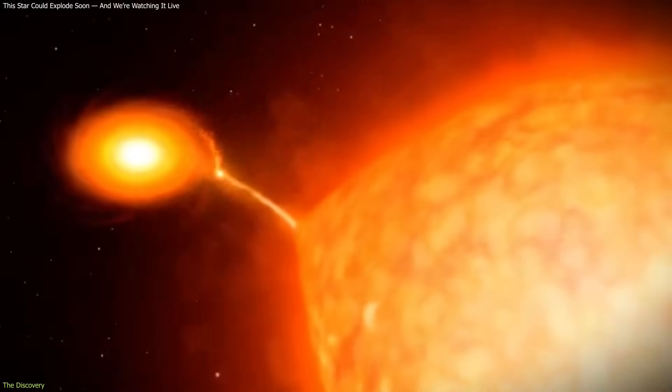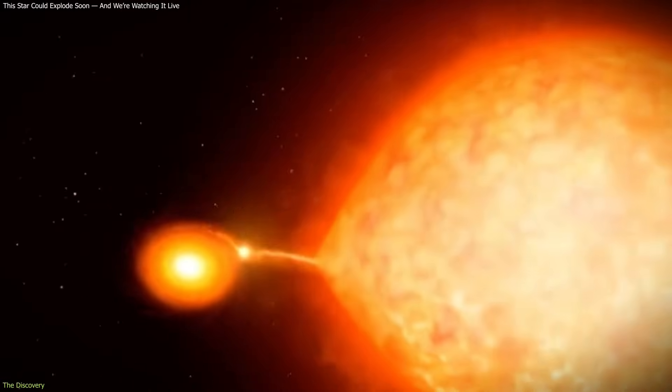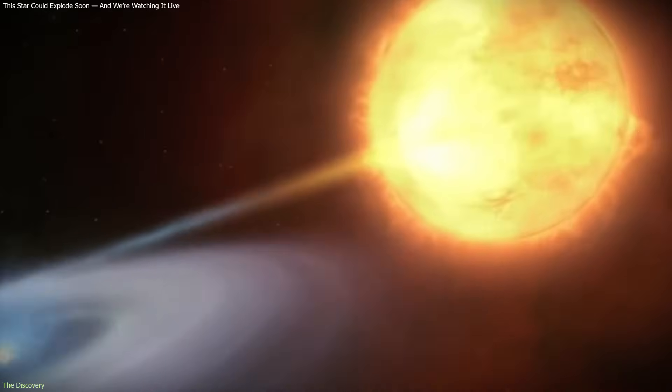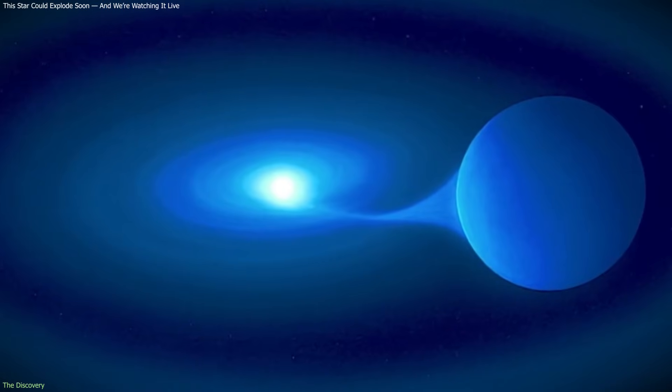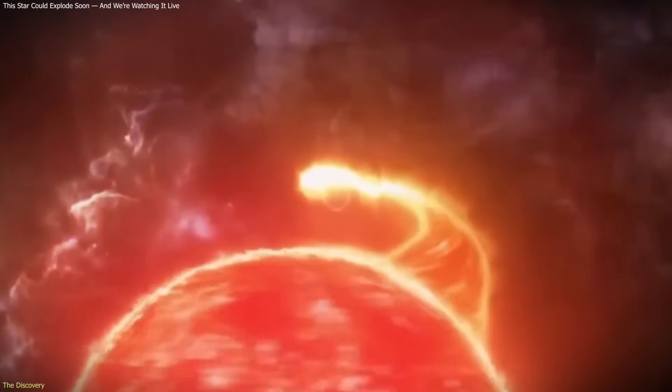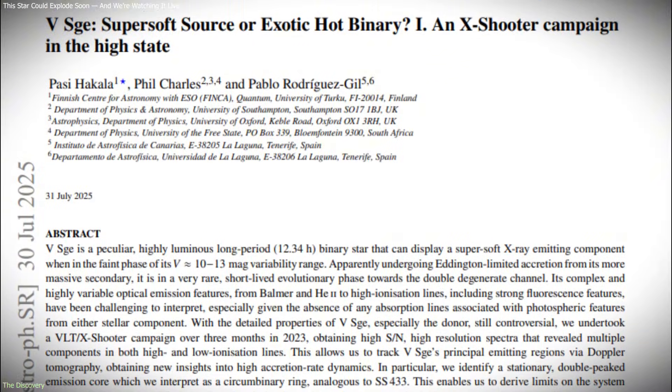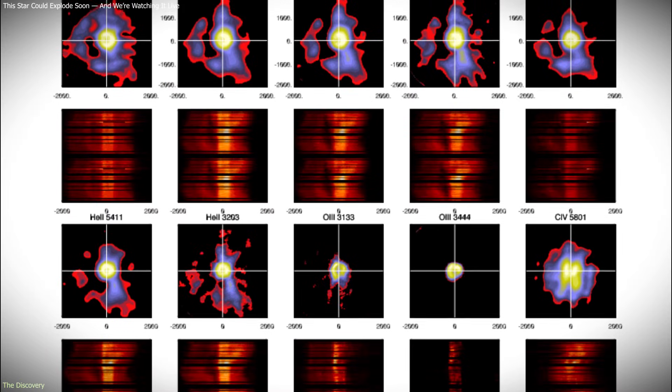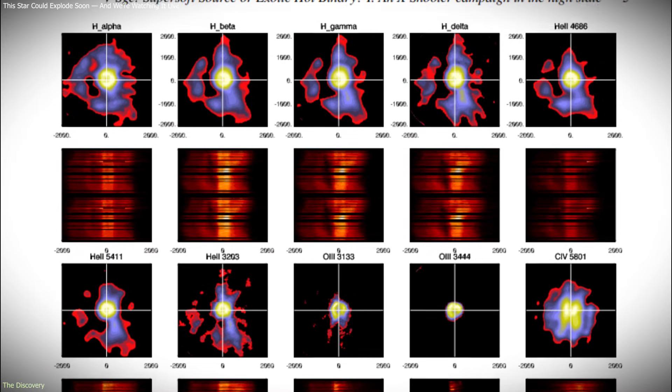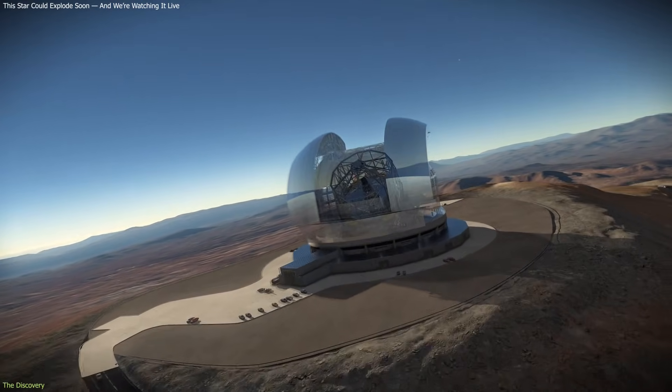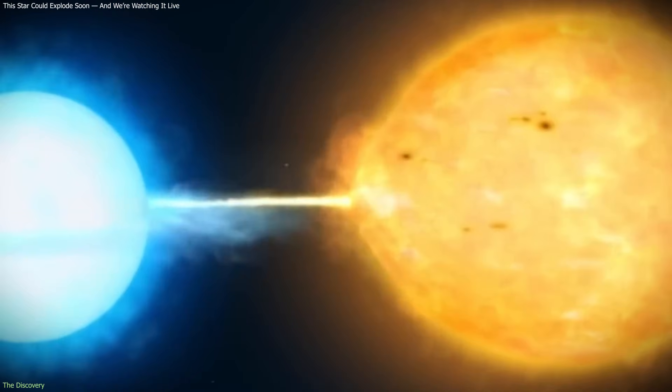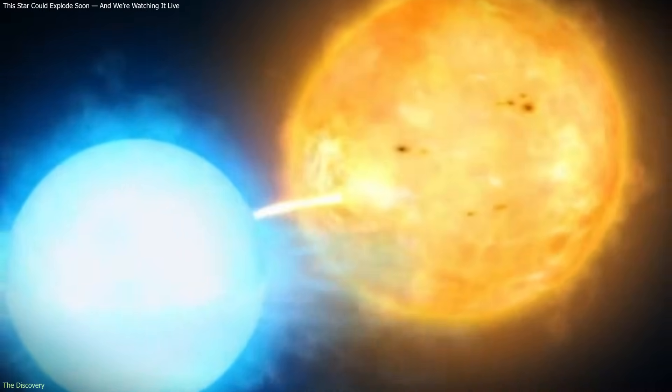V Segatai has puzzled astronomers since its discovery in the early 20th century. From the beginning, it appeared far brighter than similar binary systems containing white dwarfs. Its variability did not match existing models, leaving its true nature unresolved for decades. Recent observations have clarified the situation. Using detailed spectroscopic measurements from instruments such as the European Southern Observatory's Very Large Telescope, astronomers have been able to trace how matter moves within the system.